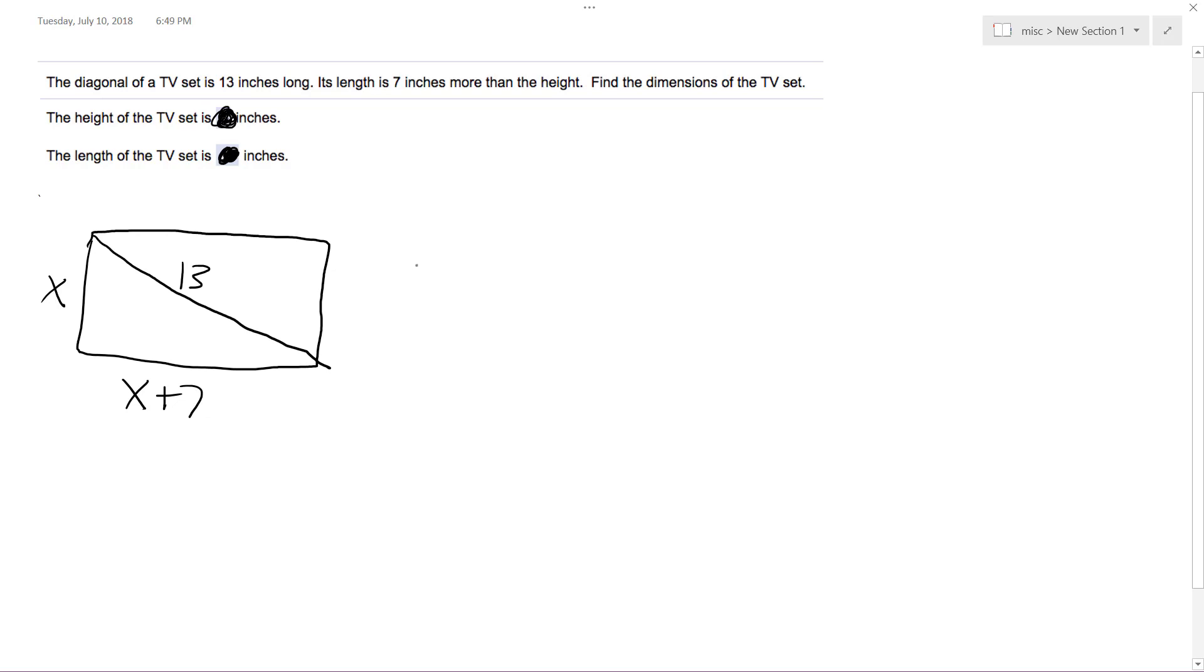All right, so we use the Pythagorean Theorem because a squared plus b squared equals c squared. a would be equal to x, b would be equal to x plus 7, and c would be equal to 13.